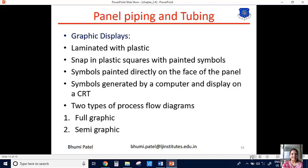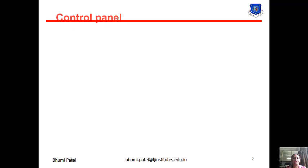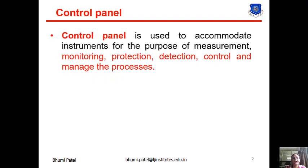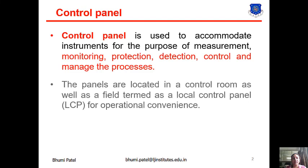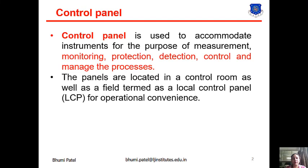First of all, the definition of control panel: a control panel is used to instrument for the purpose of measurement, monitoring, protection, detection, control, and managing the processes. In field instrumentation, one control panel is used for many functions. The panels are located in a control room as well as in the field, referred to as a local control panel, for operational convenience.